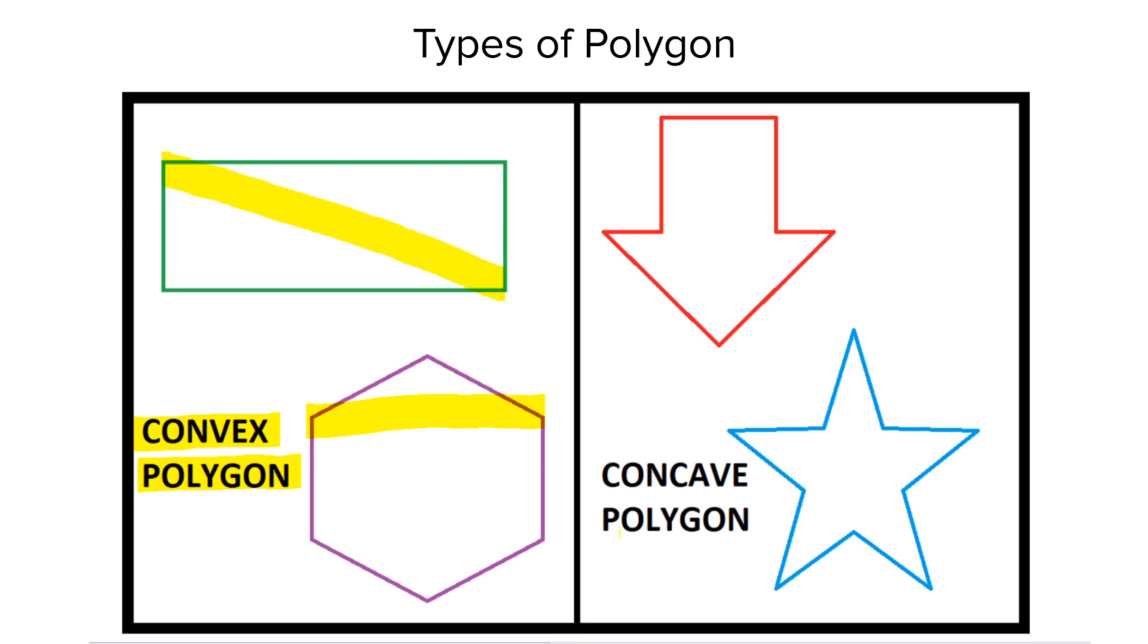However, if we see this set of polygons, they have at least one diagonal that lies in the exterior of the polygon. So, these polygons are called concave polygons.